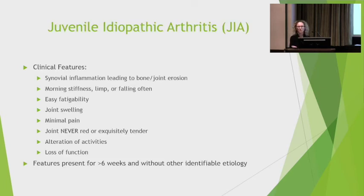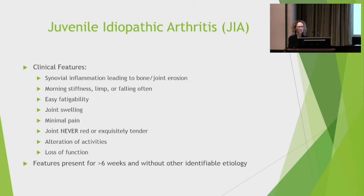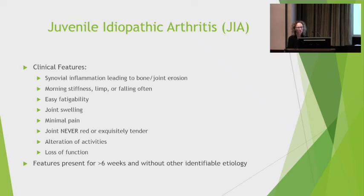Classic clinical features of JIA include morning stiffness, which is a hallmark, limping, and clumsiness — especially in younger children aged two to three years. Kids may have lost function or alternate activities due to pain and swelling. These are not children crying in severe pain; they are more uncomfortable at extremes of motion. Importantly, the joints are never red or exquisitely tender — if that's the case, think infection. These children do not typically report bone pain or nighttime awakening, which would suggest a different diagnosis.